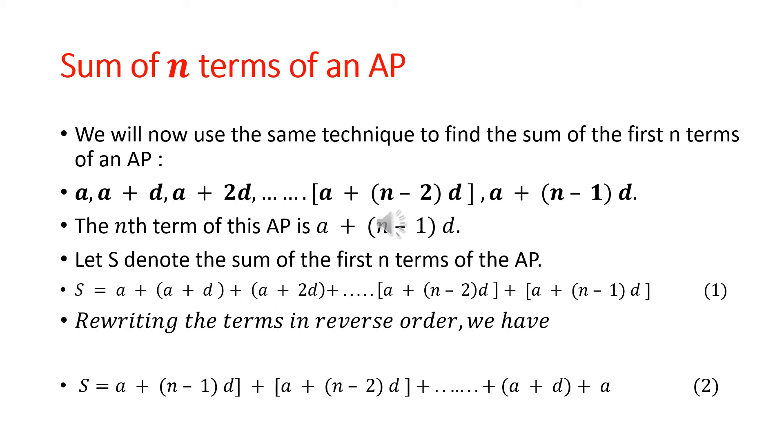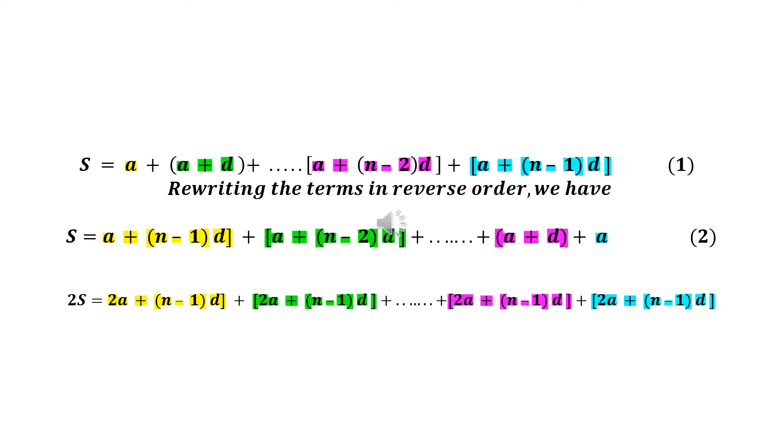Using the same principle, the sum of n terms of an AP was later developed. Suppose we have an AP with first term a and common difference d. We need to add: a + (a + d) + (a + 2d) + ... + [a + (n - 2)d] + [a + (n - 1)d]. The nth term of this AP is a + (n - 1)d. Let S denote the sum of the first n terms of the AP.